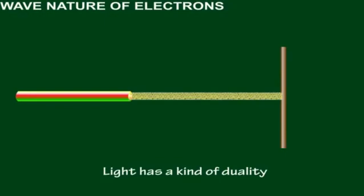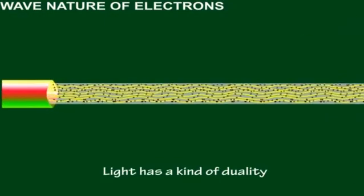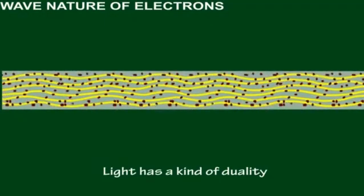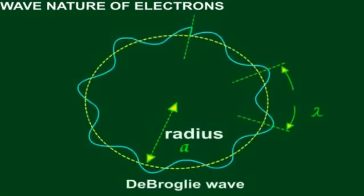Therefore, light has a kind of duality. The idea of de Broglie matter waves is based on the fact that light has both wave and particle nature.